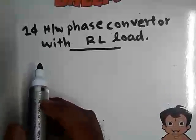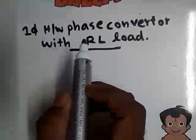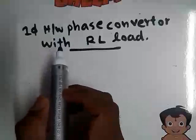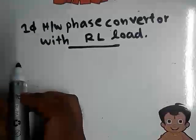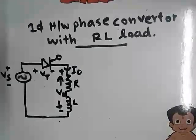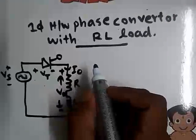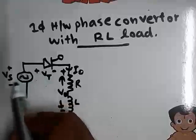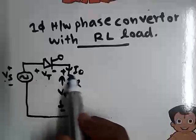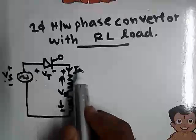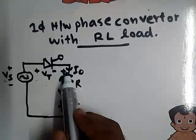In this video we are going to discuss about single-phase half-wave phase converter with RL load. The circuit diagram looks like this. We have to obtain waveforms of each parameter shown in this circuit diagram — that is Vs, Vt, V-output, and I0. These parameter waveforms have to be determined.